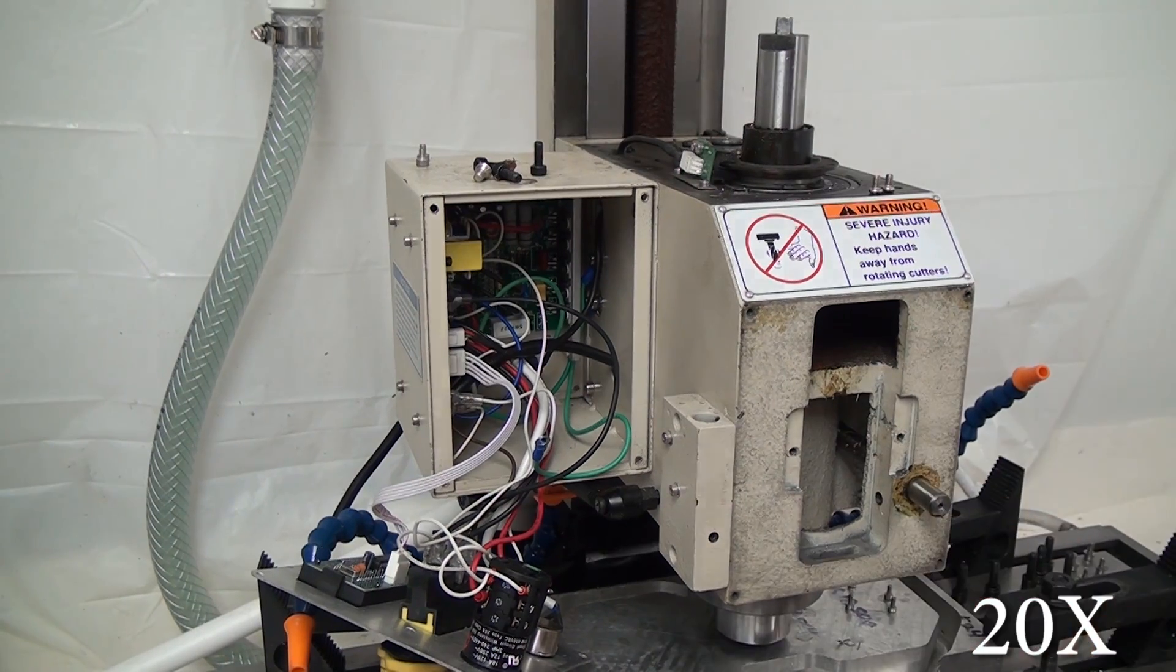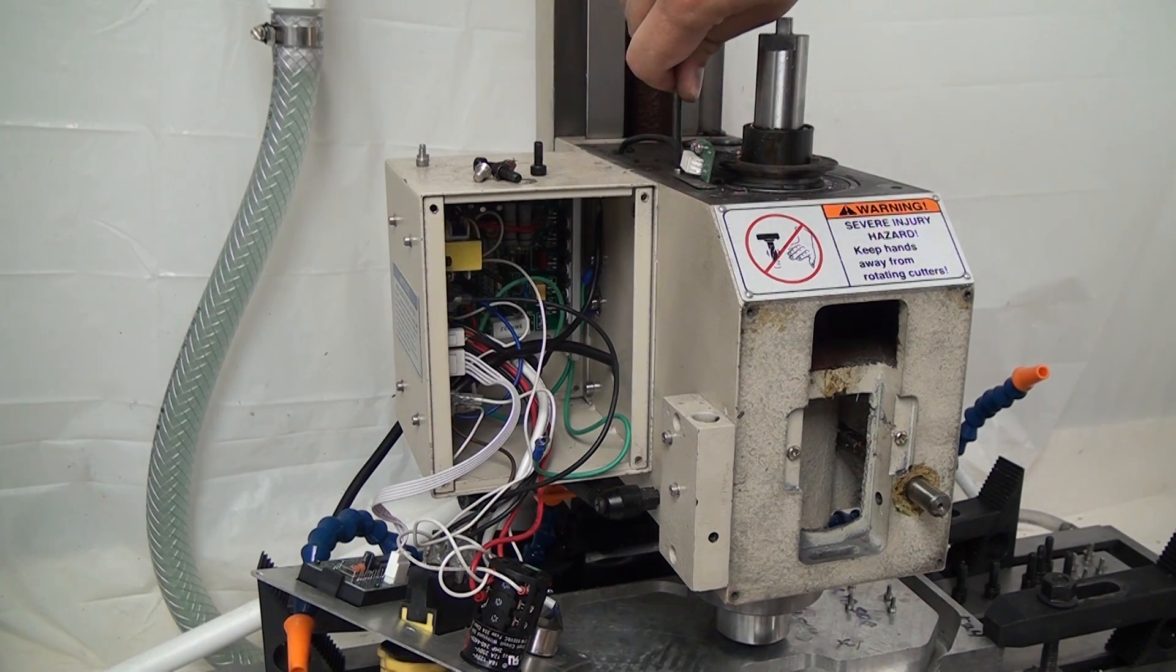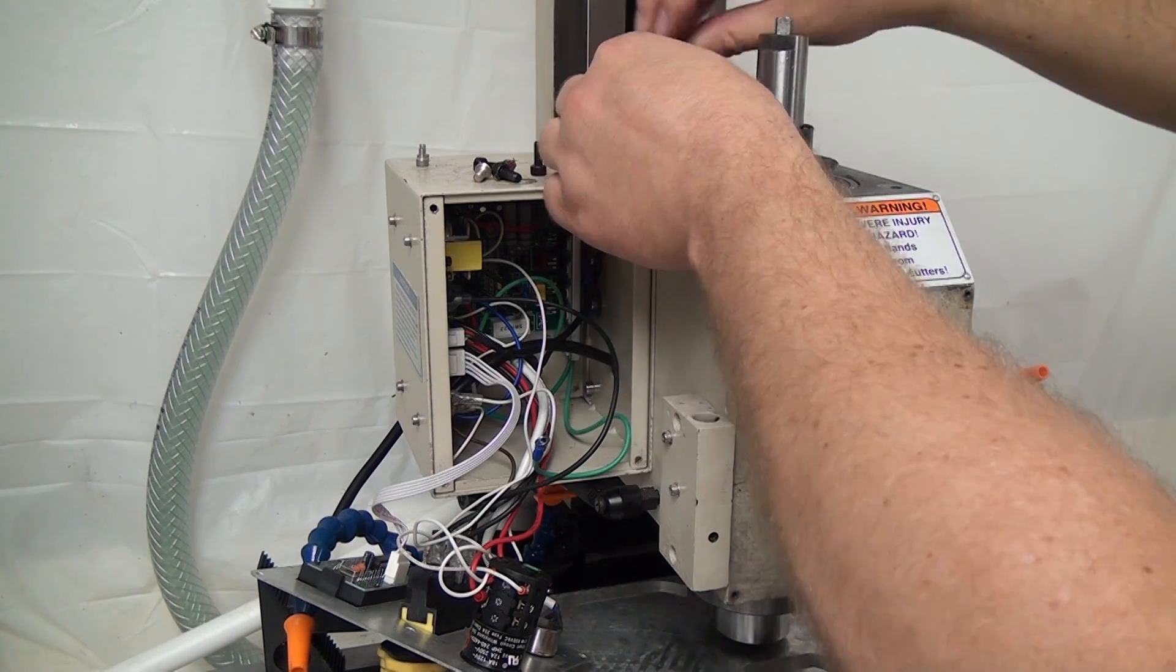I actually removed the quill arms when I did the CNC conversion, so I'm not going to be putting any of this back in. I'll probably just make an aluminum faceplate so you don't have to see this giant hole, but you could try leaving that in if you want to skip that step.